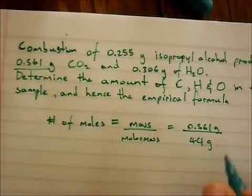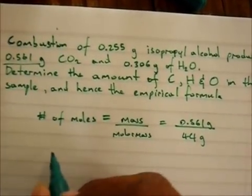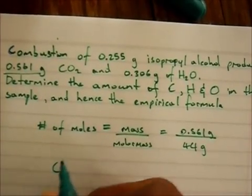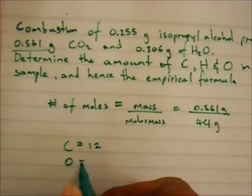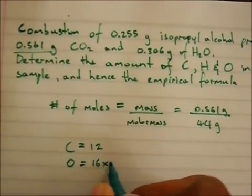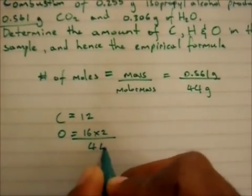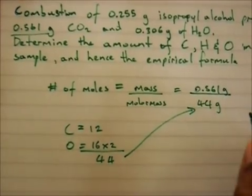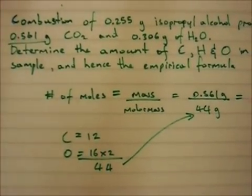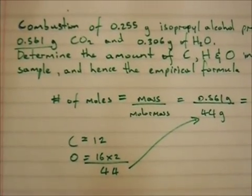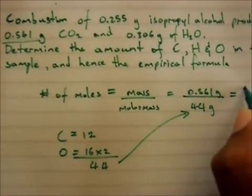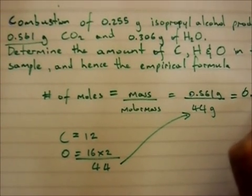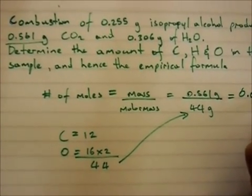That's 0.561 divided by 44 grams, because carbon is roughly 12 and oxygen is 16 times 2, giving a total molar mass of 44 grams per mole. If you work this out, 0.561 divided by 44 gives you 0.0128 moles of CO₂.